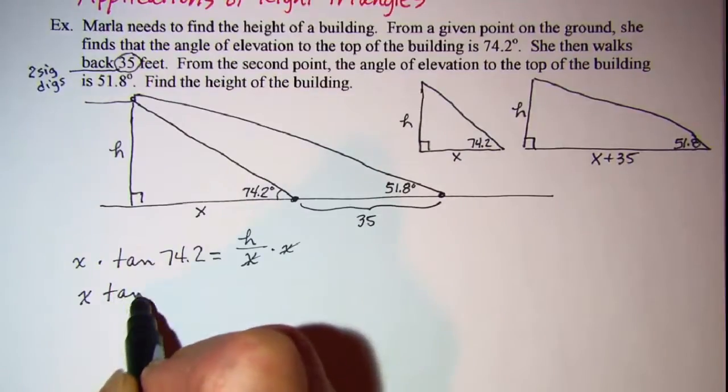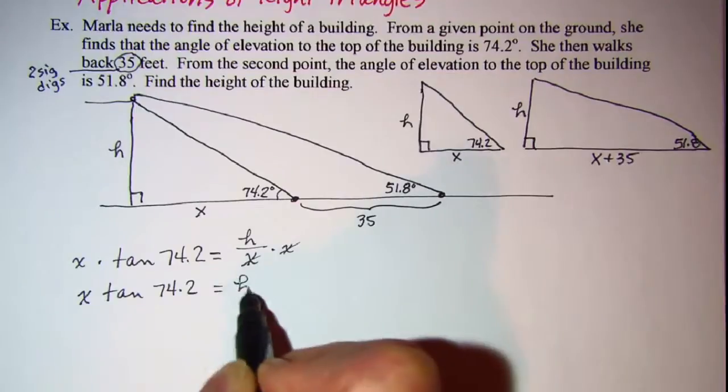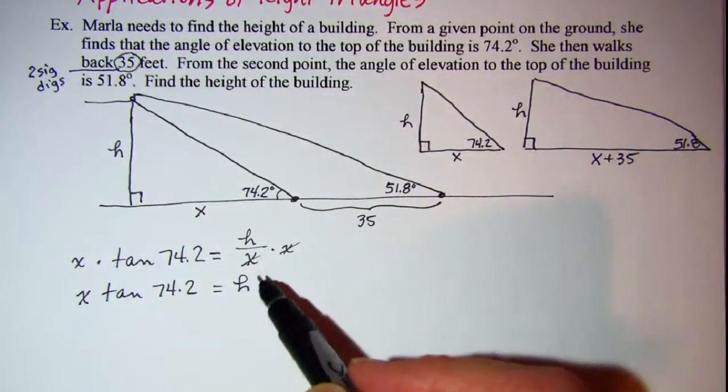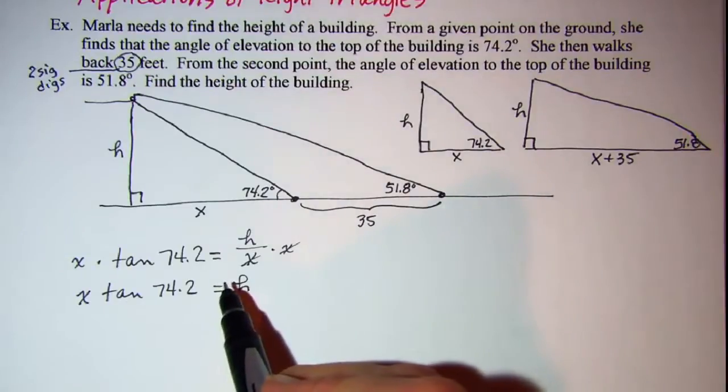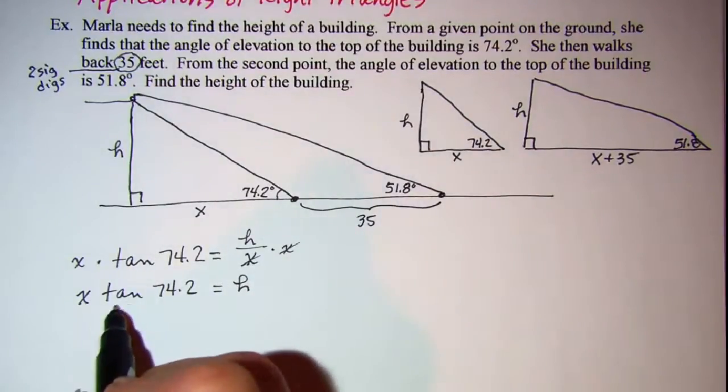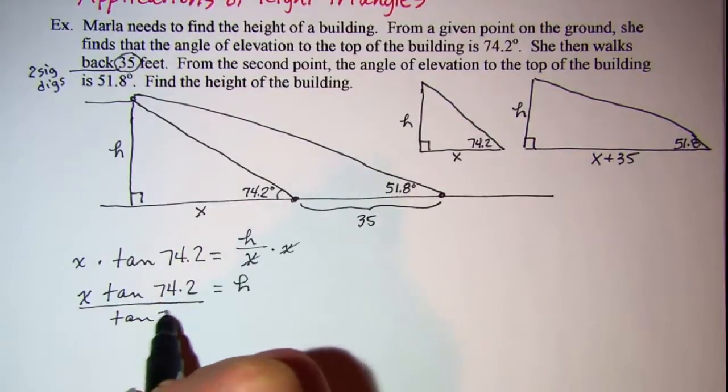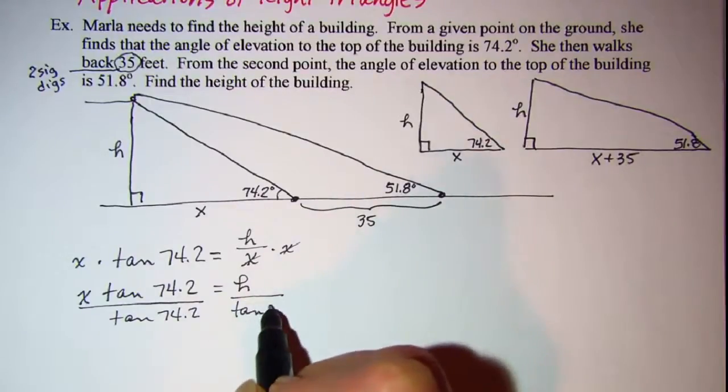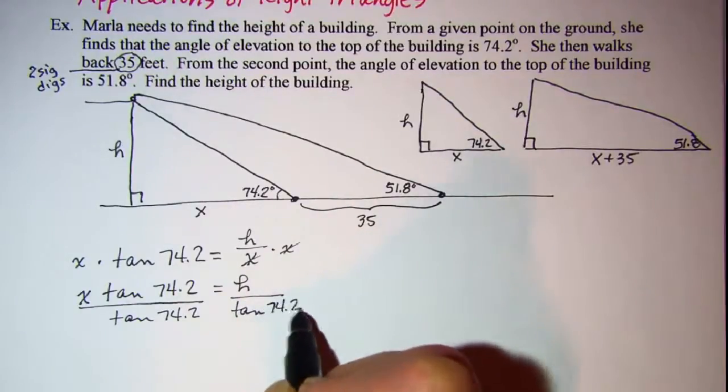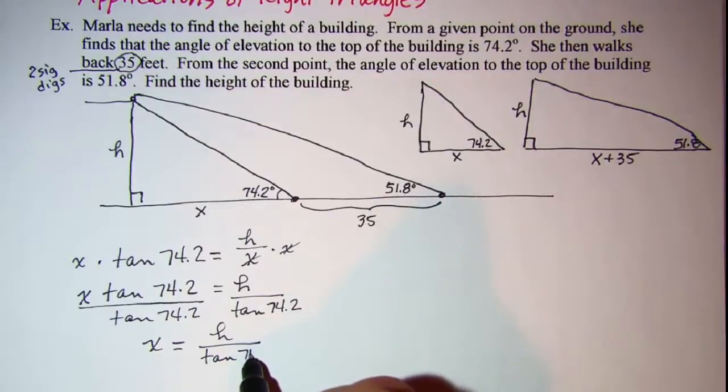X times tangent 74.2 equals H. Now I've worked this a number of different ways and I found that solving for X is the easiest. So let me divide both sides by tangent 74.2. So X equals H over tangent 74.2.